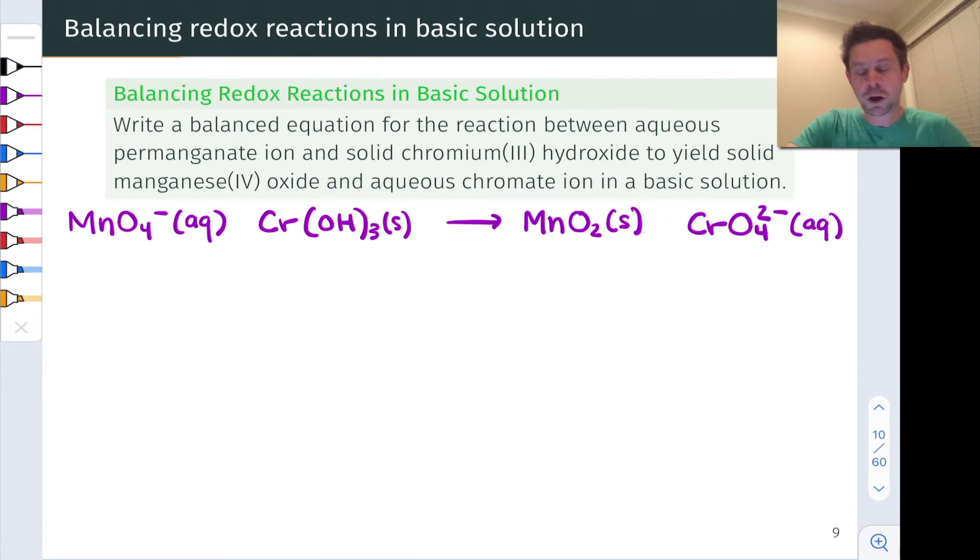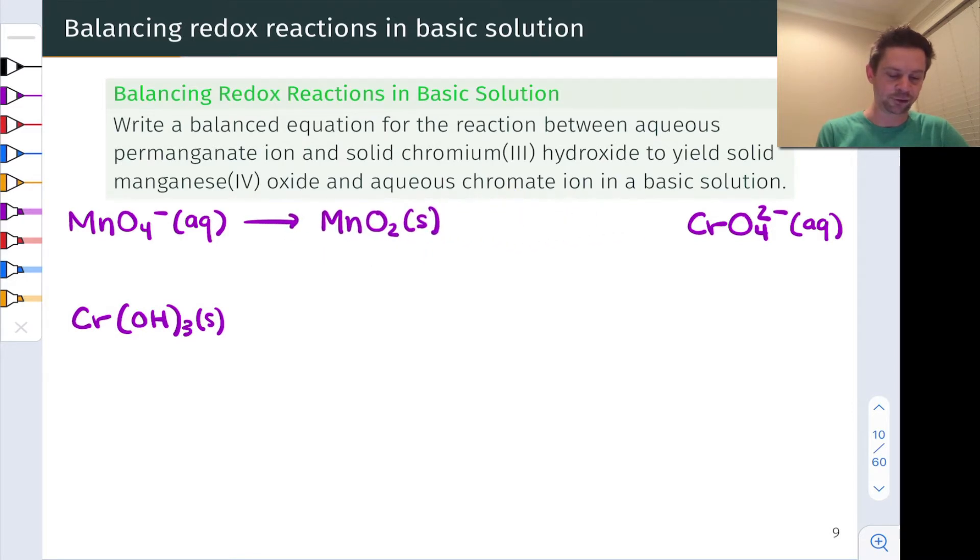In this particular example, on the reactant side we have aqueous permanganate, that's MnO4 minus, reacting with chromium 3 hydroxide, Cr(OH)3. And the products are MnO2, that's manganese 4 oxide, and aqueous chromate ions, CrO4 2 minus. So let's start by establishing our half reactions, by grouping up those species that involve manganese into one half reaction, and those that involve chromium into the second half reaction.